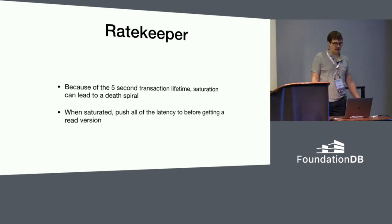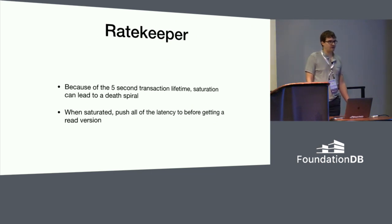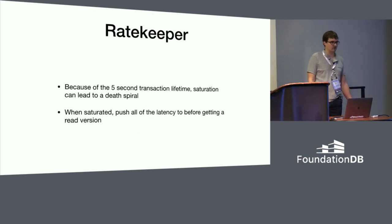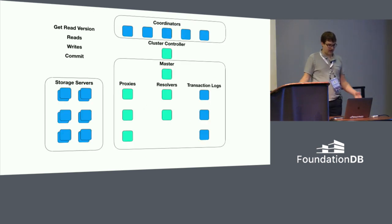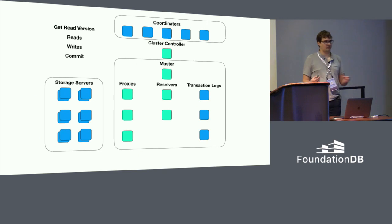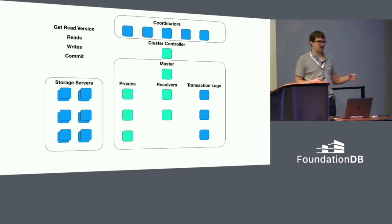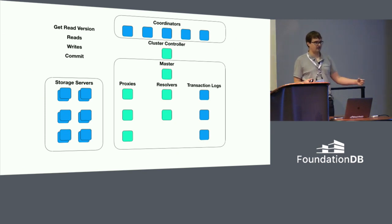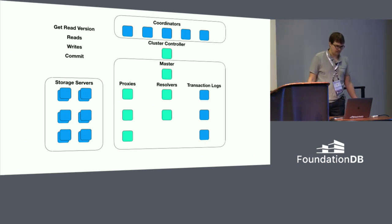Our solution to this was the concept of ratekeeper. When we're in saturation, we build up all of the latency before giving the initial read version. Your five-second limit really only starts from the moment you get a read version. So if we slow down the rate at which clients are getting versions, we ensure that even though it might take a few seconds to get a read version, once they have one they can do all the rest of their operations with very low latency. The ratekeeper component is another singleton that lives on the master.